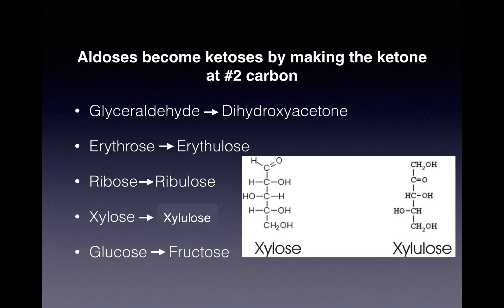Carbon number one is where the aldehyde is in xylose, and then in xylulose carbon number two is where we make the ketone. The same pattern follows for any of these that are listed here. I hope that helps.